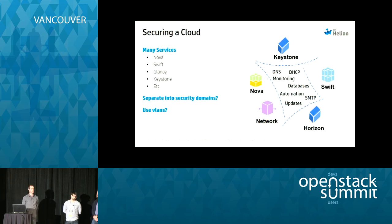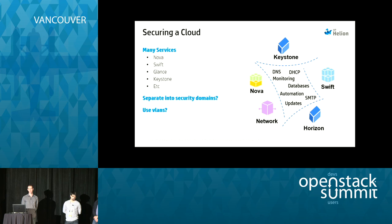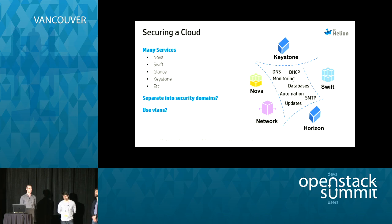A typical cloud deployment has loads of services — Nova, Swift, Glance, etc. Traditionally, you'd separate them into security domains, look at some filtering and monitoring between the domains, maybe using physical separation or VLANs. This works great on paper, but then you add all the other services you need to make a system work, and you end up with a huge number of things needing to talk to lots of other things.